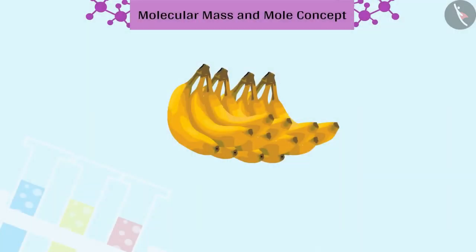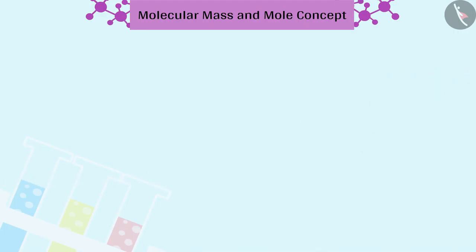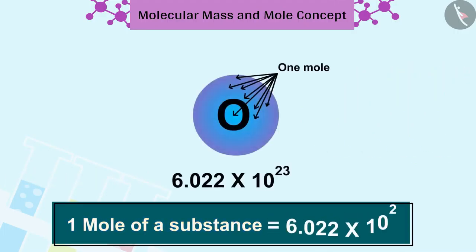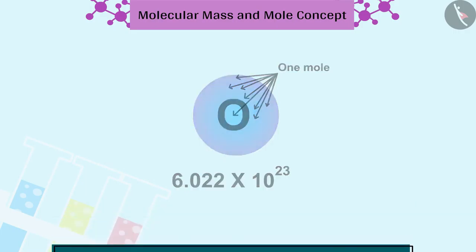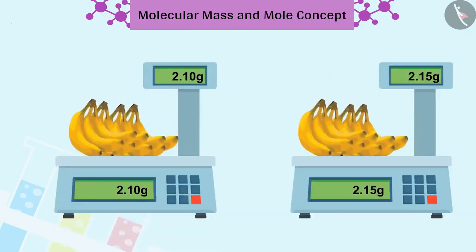For example, a dozen of an object is equal to 12 objects. In the same way, one mole of a substance is equal to the 6.022 into 10 raised to 23. Besides being related to a number, a mole has one more advantage over a dozen or a gross.